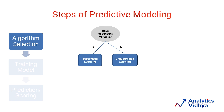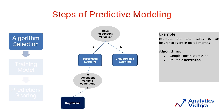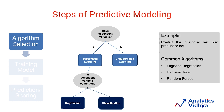If we have a dependent variable, we use supervised learning algorithms; if we don't, we use unsupervised learning algorithms. For example, if you want to predict whether a customer would default or not, you would use a supervised learning algorithm, because you want to predict a dependent variable based on independent variables. On the other hand, if your organization wants to segment its customers, you would use unsupervised learning algorithms. If the dependent variable is continuous, we use regression; if it is categorical, we use classification algorithms like logistic regression or tree-based models.